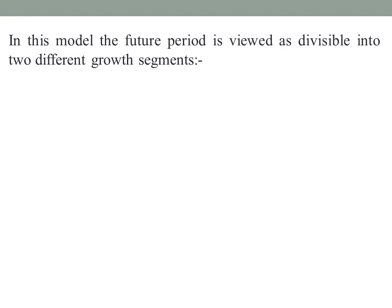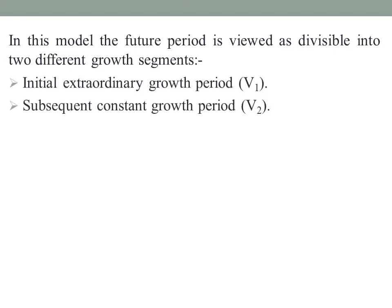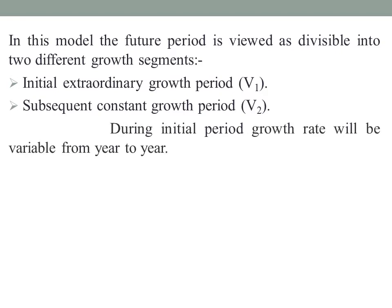In multiple growth models, the future period is viewed as divisible into two different growth segments. The initial stage is known as the extraordinary growth period, and the second stage is known as the subsequent constant growth period. In the initial period, the growth rate varies from year to year.